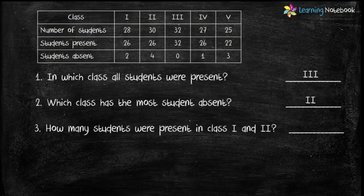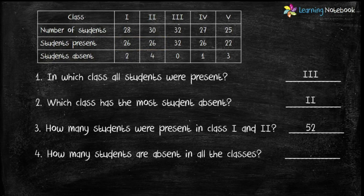Question 3: How many students were present in class 1 and class 2? We add students present in class 1, which is 26, and class 2, which is 26. So 26 plus 26 equals 52. Question 4: How many students are absent in all the classes? We add students absent in class 1, class 2, class 3, class 4, and class 5, and we get the answer as 10.